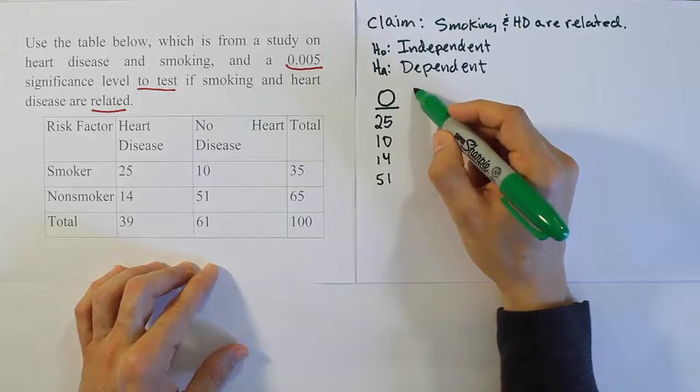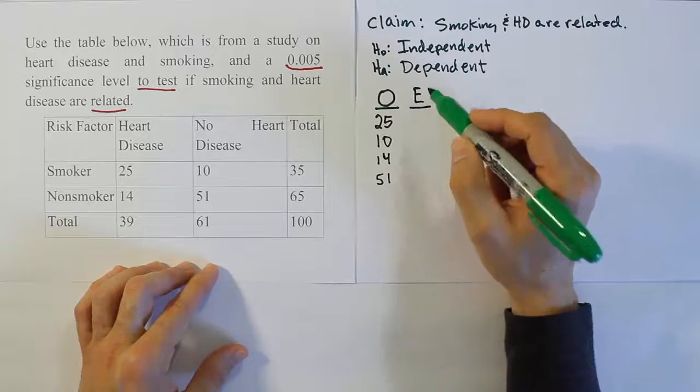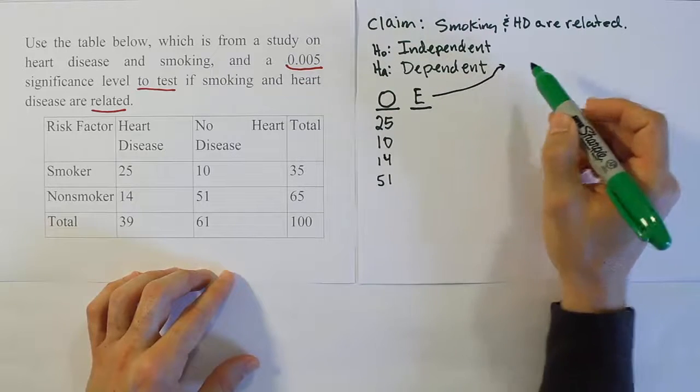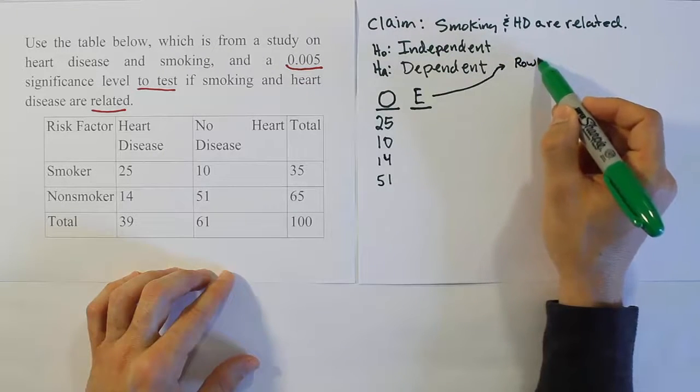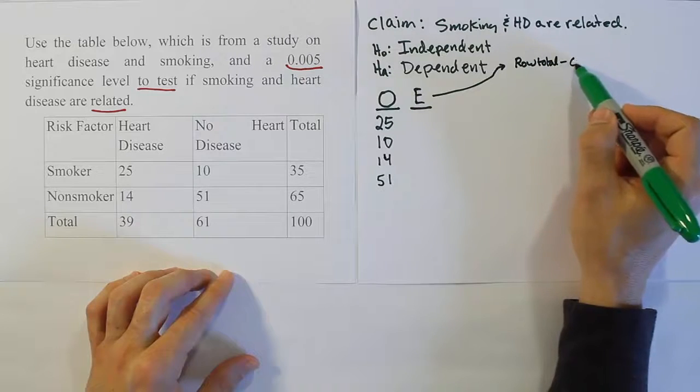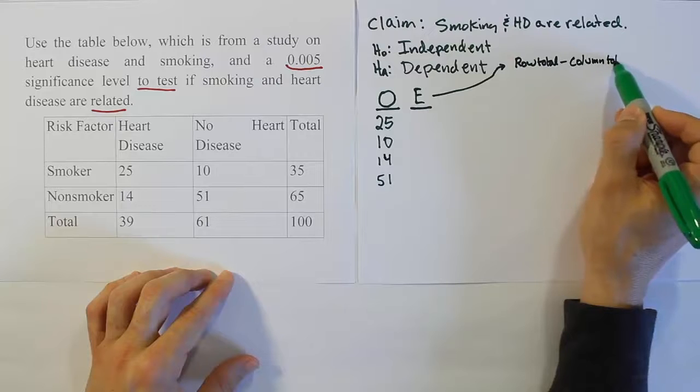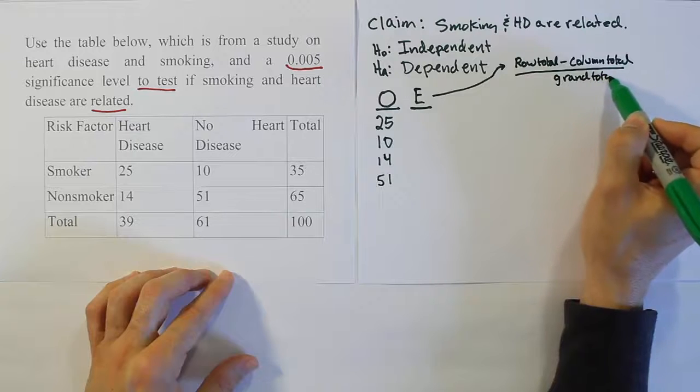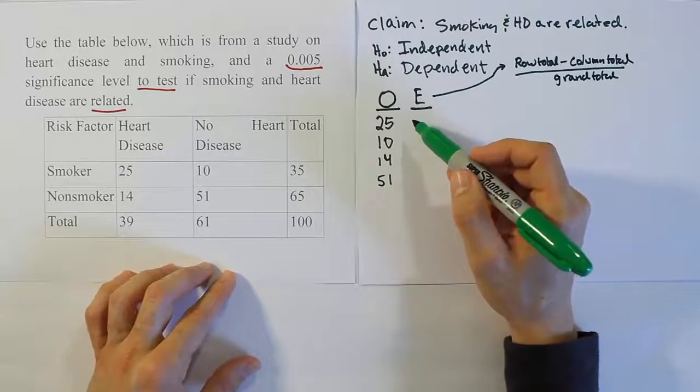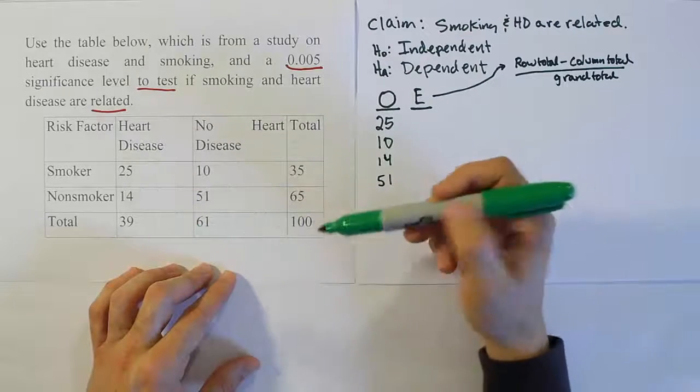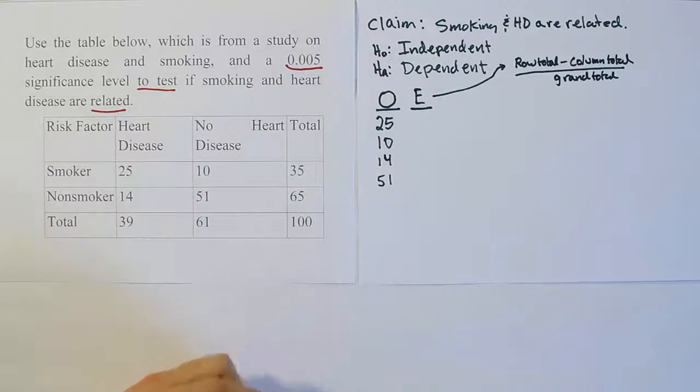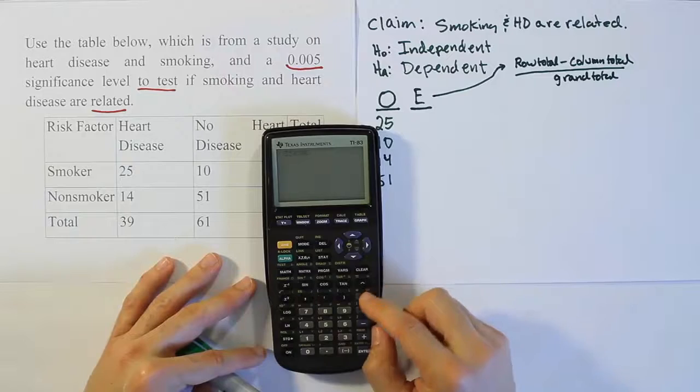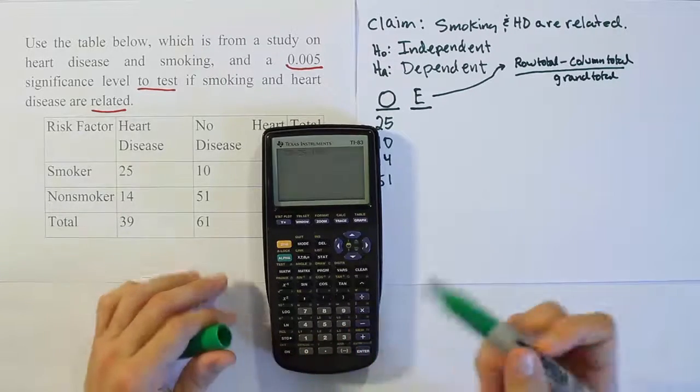Now let's put the expectations here in the problem. When we go down the list for the expectations, remember how we do this. It's row total times column total divided by grand total. For the expectation for 25, it's going to be 35 times 39 divided by 100. So 35 times 39 divided by 100 gives us 13.65.